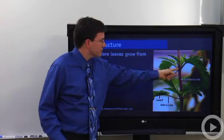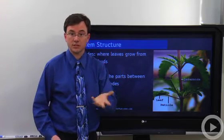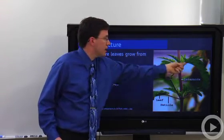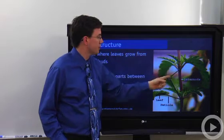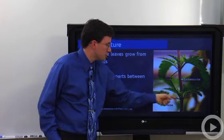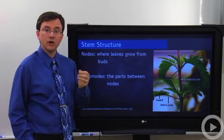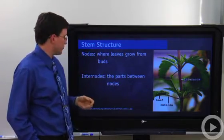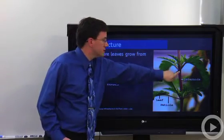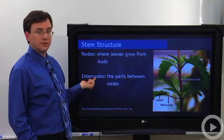Now in the stem, you'll have these regions called nodes, and that's where branches will come off and the leaf coming off of there. The leaf you can see here is held on by the petiole to the stem. You'll also have what are called buds, where new leaves or new branches could grow from. The internode is the region between nodes, hence the name inter, which means between a node.